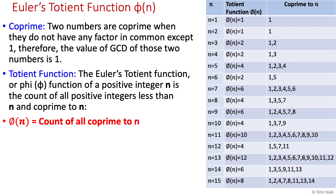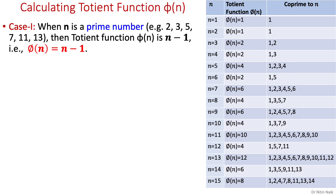The table shows the Totient function value of 1 to 15, which is basically the count of all co-prime numbers. We can calculate the Totient function depending on whether n is a prime number or a composite number.